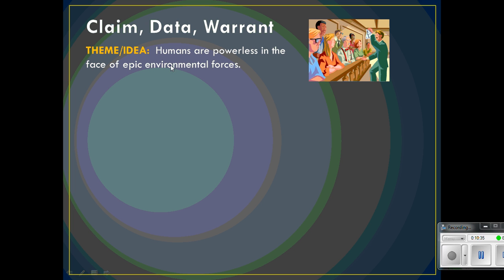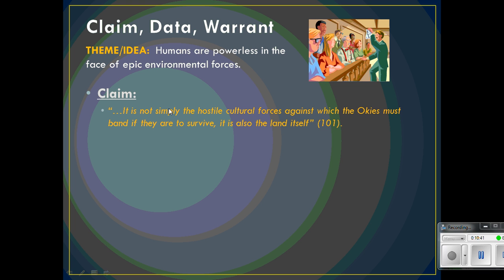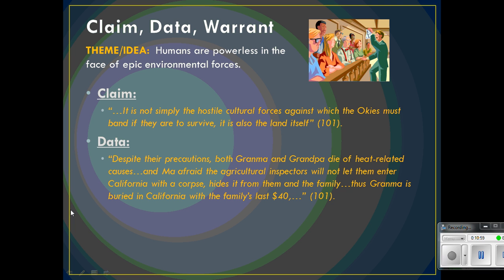The claim is on page 101 when Goggins states: 'It is not simply the hostile cultural forces against which the Okies must band if they are to survive. It is also the land itself.' So there are the environmental forces — that's the claim. Now we're going to see how she is going to support that claim.